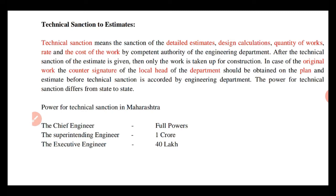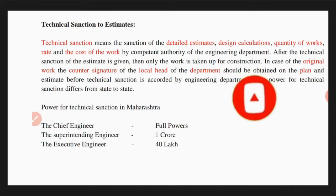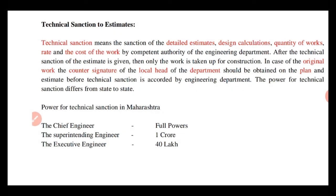Administrative approval और expenditure sanction होने के बाद, detail drawing, detail design, और detail estimate — quantity of work, उसके rates और total cost — work out करके competent authority से sanction करना पड़ता है। उसके बाद ही project का construction शुरू कर सकते हैं।